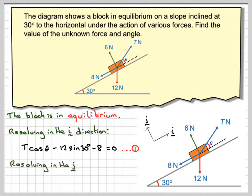And then resolving in the J direction, perpendicular to the slope, we're going to have T sine theta plus 6 minus 12 cos of this angle here, 30. Because this angle here will be 30 if we draw this line in here. And that's equal to 0. So we've got our two equations, two unknowns.